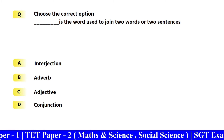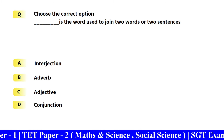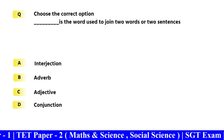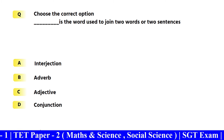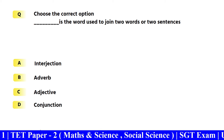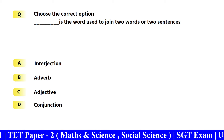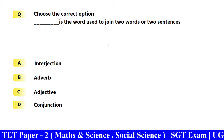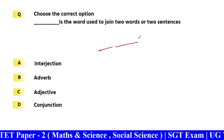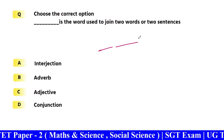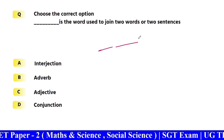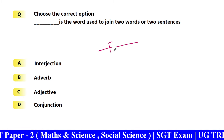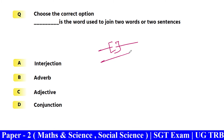Next: Choose the correct option — dash is the word used to join two words or more, or two sentences. Two words, a phrase, a sentence — the word we use to join them is a conjunction.